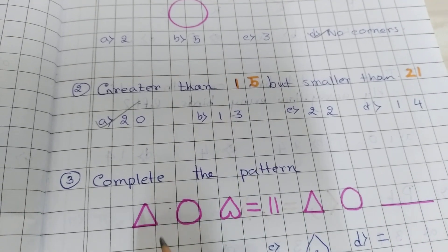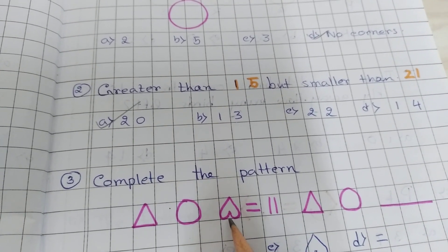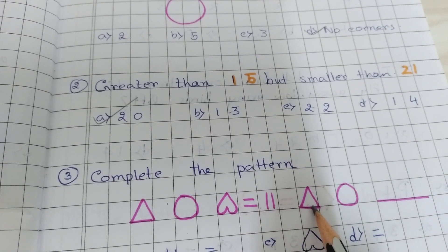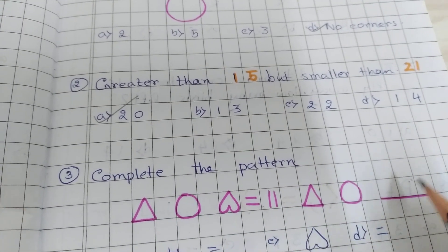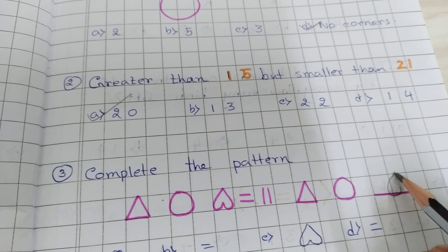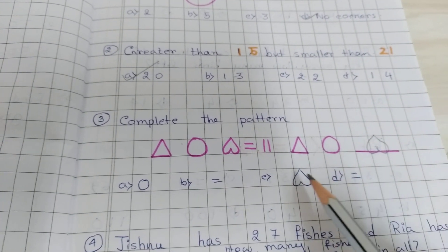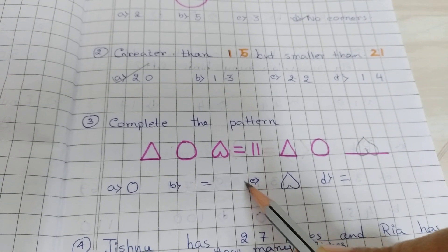Complete the pattern. Triangle, circle, heart shape, equal, parallel lines, again triangle, circle, heart shape. So it will be heart shape, option C is correct.